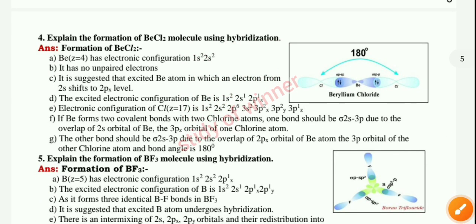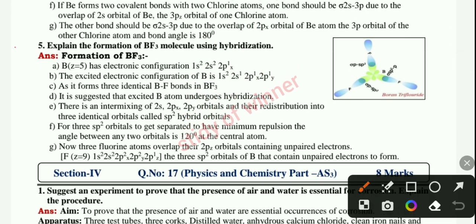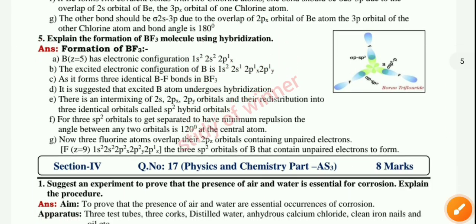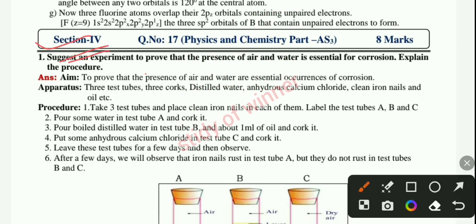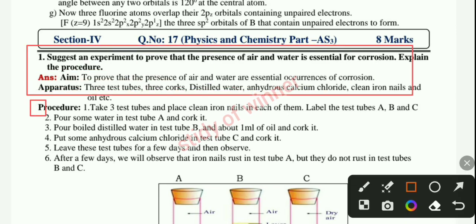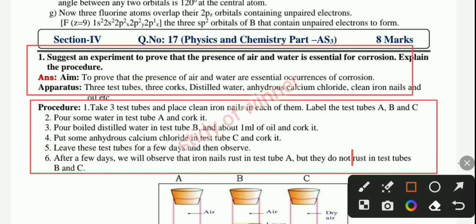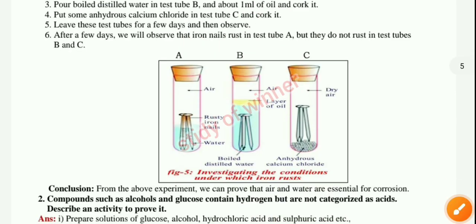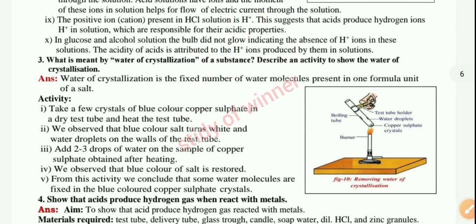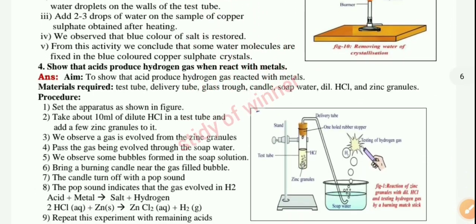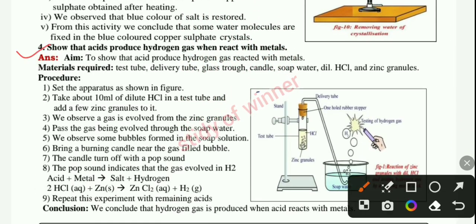Next, question four and question five in Section 4. Then your Section 17 important questions — you can see the first question with its answer, the second question, the third question, and the fourth question.